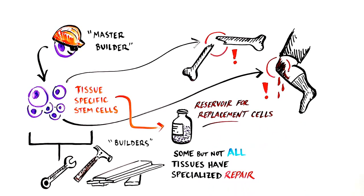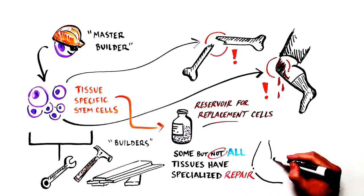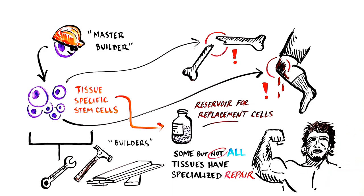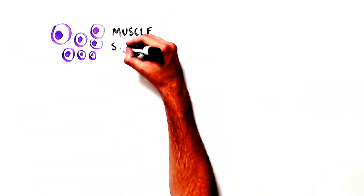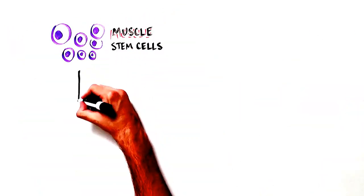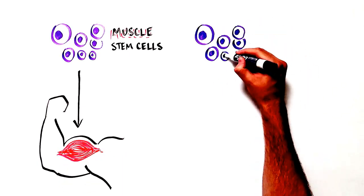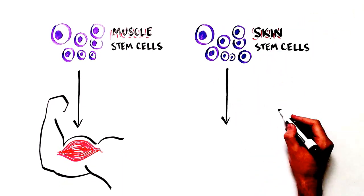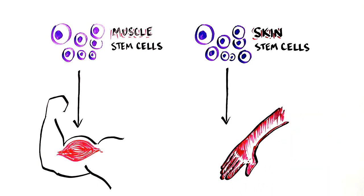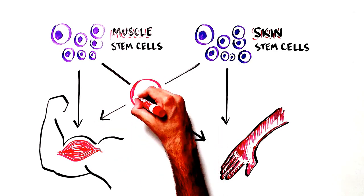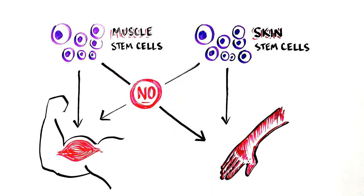Some, but not all, tissues have specialized self-repair tools to fix themselves when they are damaged from large or small injuries, like tiny muscle tears from a few hours at the gym. When the tissue is damaged, self-repair mechanisms kick in. Muscle stem cells fix the torn muscle fibers, and skin stem cells repair dead skin after a sunburn. But each tissue can only be repaired by its dedicated tissue stem cell. Muscle stem cells cannot repair skin, and skin stem cells can't repair muscle fibers.